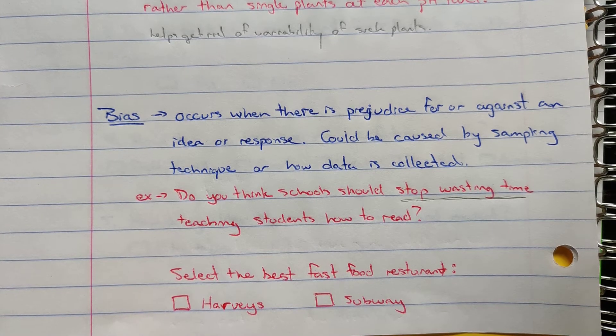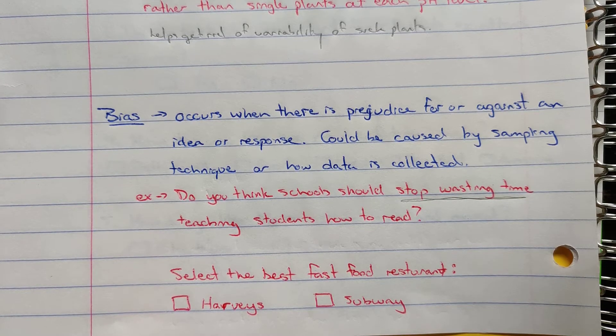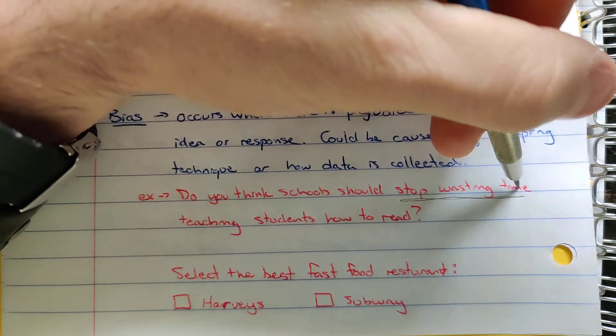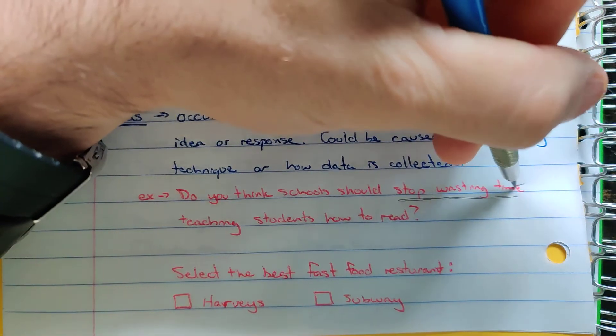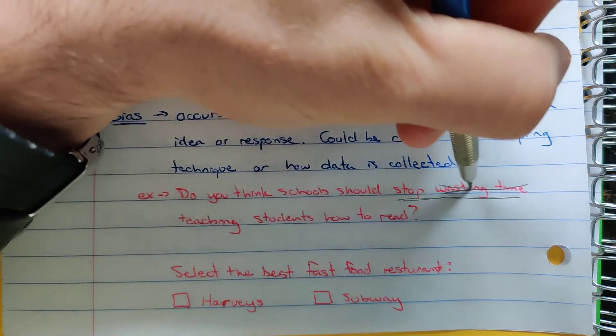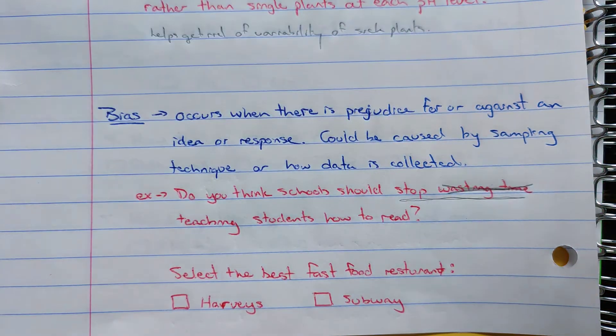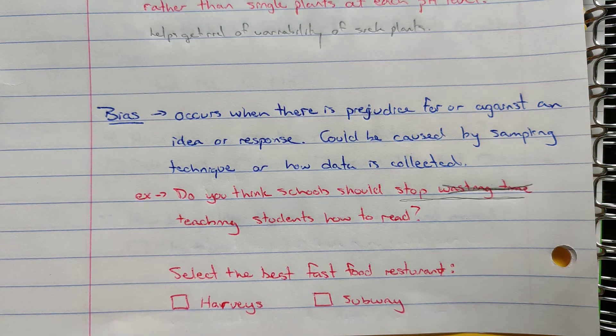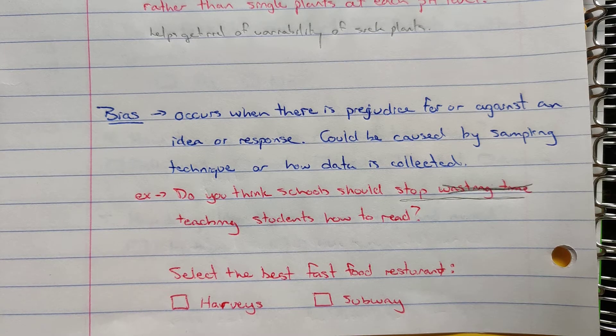We want people to think that teaching kids how to read is a bad thing and we're influencing that because we're using our own personal bias to say we think this is a waste of time, we want you to agree with us. You could easily fix that by just cutting out 'wasting time.' So do you think schools should stop teaching kids how to read would be a more appropriate question. It would help remove some of the bias.